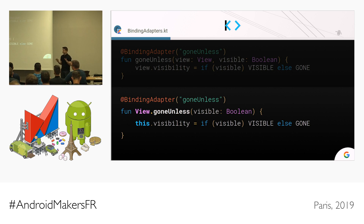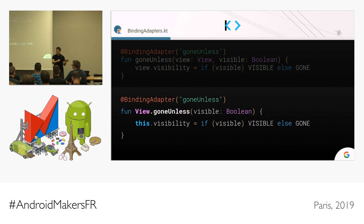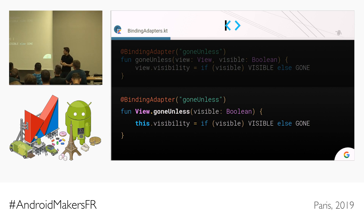What the cool kids do nowadays is use extension functions. This is very cool because adding an extension function on the class means that the list of attributes in the annotation is going to match the list of values in the method — it's a one-to-one relationship. Also, when this compiles to bytecode, the instance of the view is going to be the first parameter, which is exactly what data binding expects. It's a good coincidence.